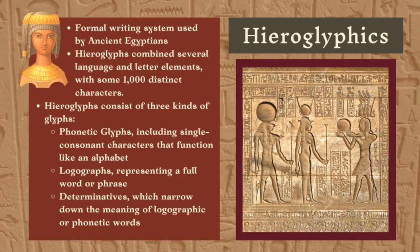Hieroglyphs consist of three kinds of glyphs: phonetic glyphs, including single consonant characters that function like an alphabet; logographs, representing a full word or phrase; and determinatives, which narrow down the meaning of logographic or phonetic words.